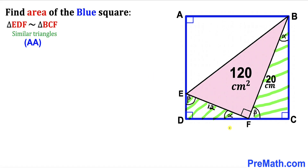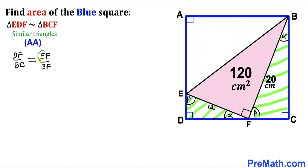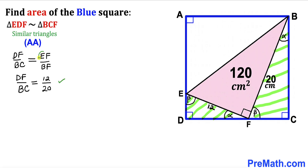Because of this similarity, we have a proportion: DF divided by BC equals EF divided by BF. Substituting the known values, EF is 12 and BF is 20, so the ratio on the right-hand side is 12 divided by 20.